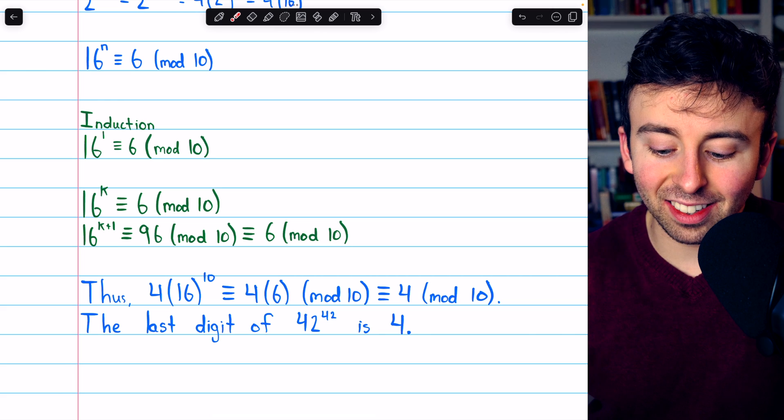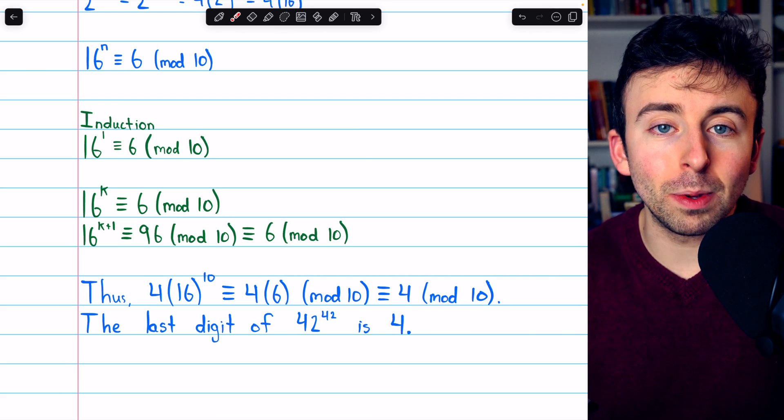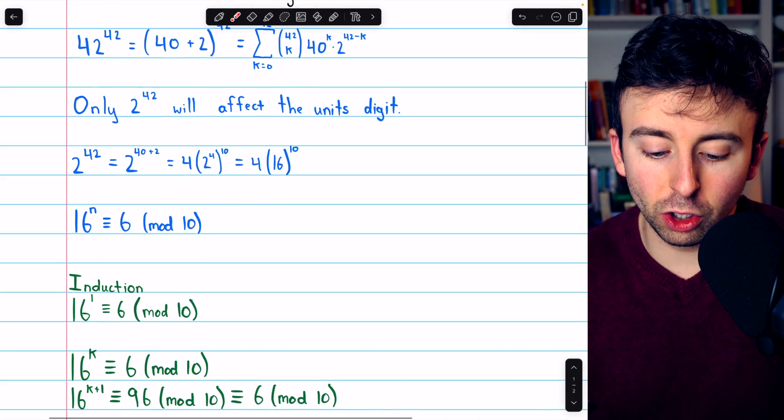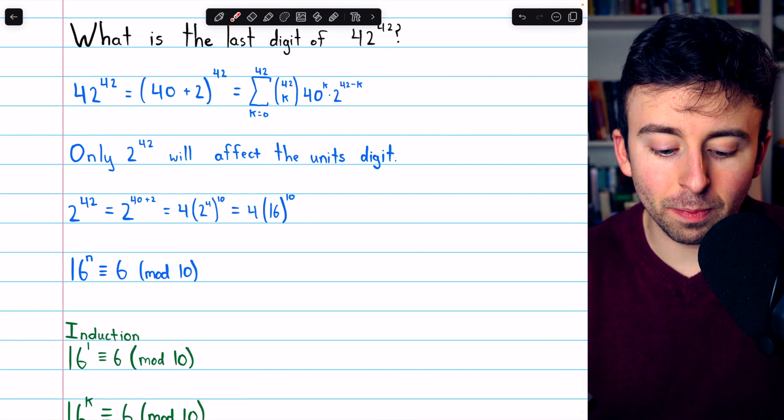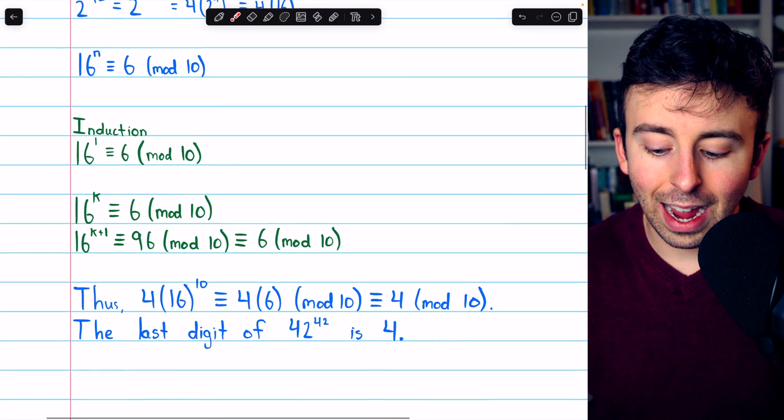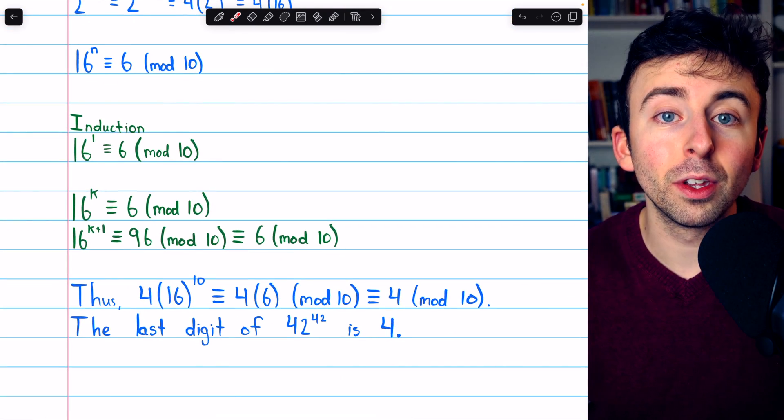Thus, the last digit of 42 to the 42 must be 4 because 2 to the 42 is what impacts the unit's digit. And we see that 2 to the 42 has a unit's digit of 4.